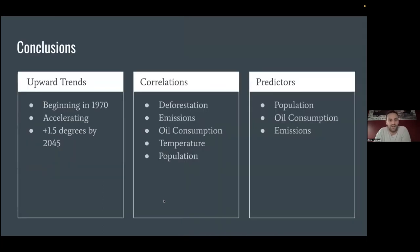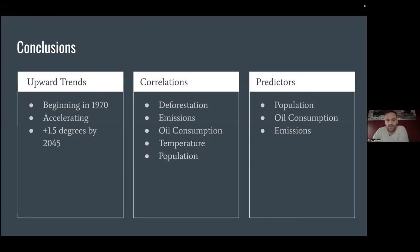The big takeaways are a strong upward trend beginning in the 1970s which is accelerating and projected to be at least 1.5 degrees higher by 2045, as well as strong correlations between the variables in the regression model. An interesting takeaway is that GDP had almost no correlation — while the EPA estimates 24% of total emissions are caused by industrial consumption, that doesn't necessarily correlate with an increase in GDP. Population and emissions are the key predictors of temperature change.